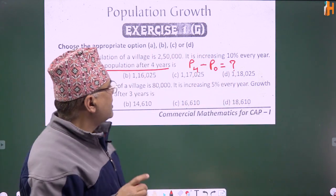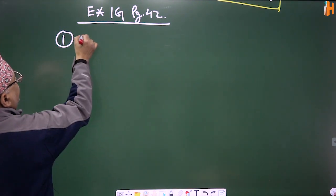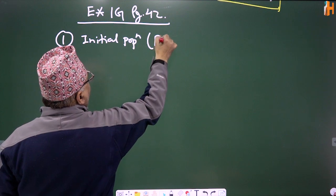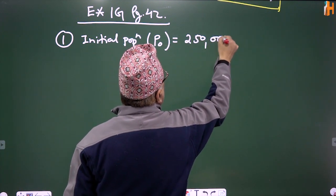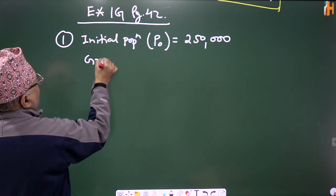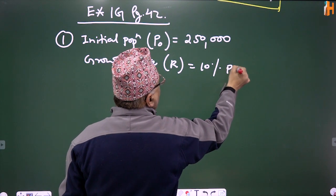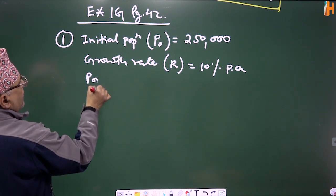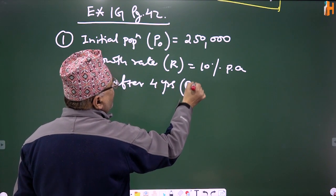P4 is what we need to find. The initial population P0 is given as 2,50,000. The population growth rate R is equal to 10% per annum every year. Then find the population after 4 years, P4.